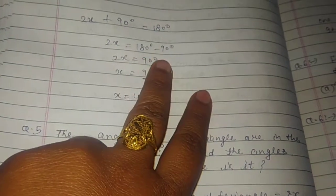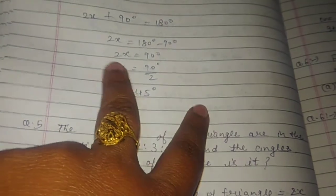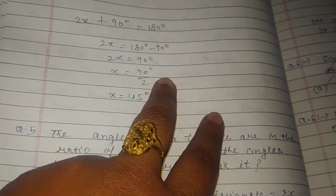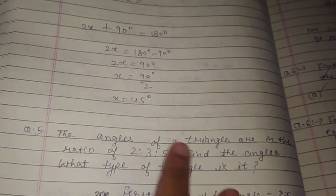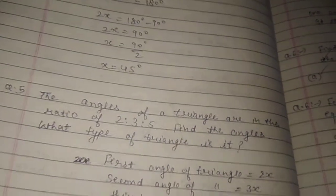2x equals 180 minus 90 degrees, and 2x equals 90 degrees, x equals 90 by 2. So x equals 45, and the second angle also equals 45.